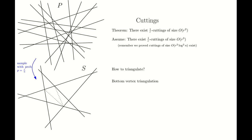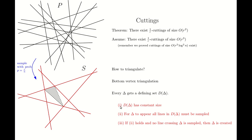What are the main properties of bottom vertex triangulation? First, every triangle gets a defining set, denoted by d(δ). This bottom vertex triangulation has three important properties. First, the defining set of every triangle is constant size — in fact, there are at most five lines in the defining set of every triangle. For example, this triangle is created by three vertices; each vertex is created by two lines, and if you look at all the lines that define these vertices, the number of those lines is five, which is the maximum possible.